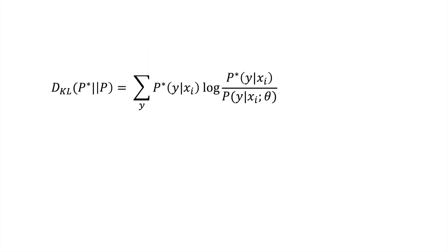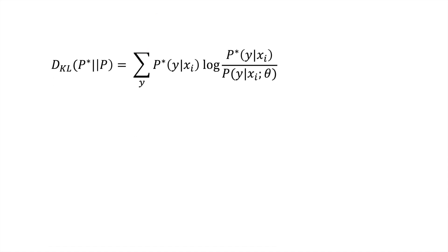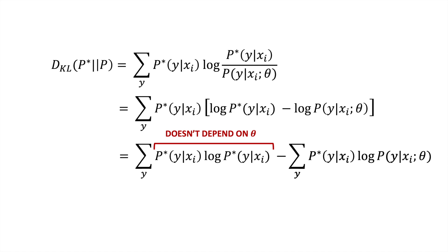We can also simplify this expression by basic log rules and turn the division inside the log into a subtraction outside the log. We can then separate the two expressions into distinct summations, and finally note that the first term does not depend at all on the parameters of the model, and in fact is just the entropy of the label distribution.